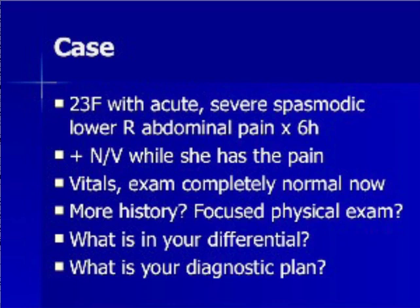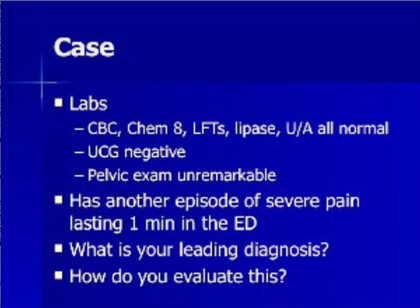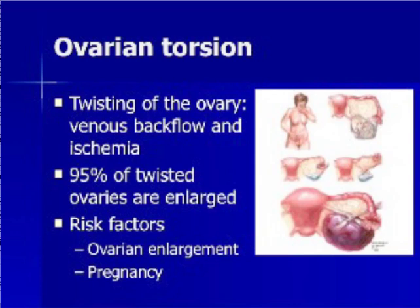A 23-year-old female presents with acute severe spasmodic lower right abdominal pain for six hours with severe nausea and vomiting. Her vital signs and physical exam are completely normal. Assume that she has no other symptoms on history and that her physical examination and laboratory work are normal, and pelvic examination is unremarkable. When she has another episode of severe pain, doubling over and writhing with vomiting, the leading diagnosis is ovarian torsion.